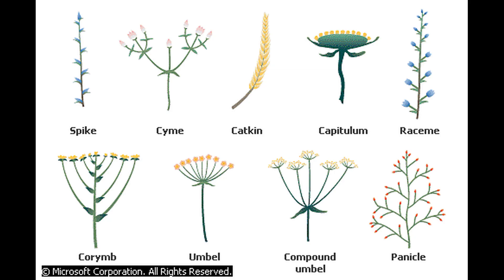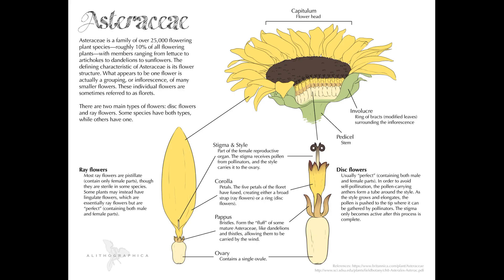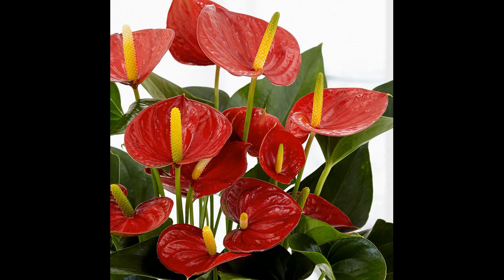Flowers themselves often form clusters on the plant which are called inflorescences, the branching pattern of which varies widely between different groups. Sometimes the flowers can be arranged in a very tight cluster, such that they are often falsely recognized as one single flower. This is especially the case with members of the family Asteraceae, such as sunflowers — actually composites of many disc flowers at the center surrounded by a ring of ray flowers. Another example is the Araceae family, which includes the common houseplant anthurium, with tiny flowers densely packed on a fleshy stem called a spadix, surrounded by a specialized leaf called a bract.